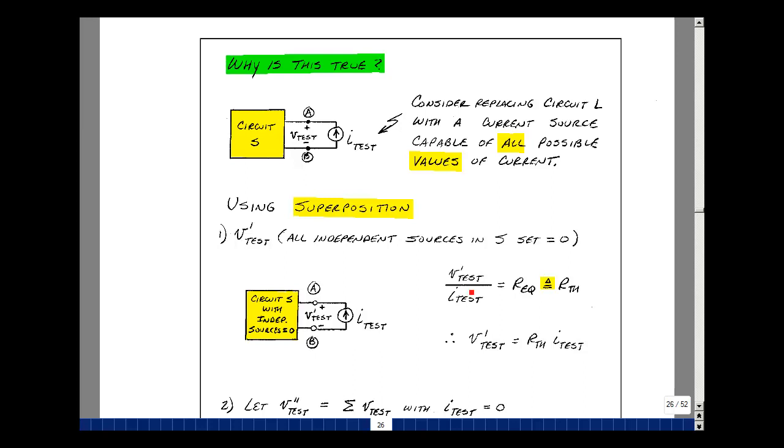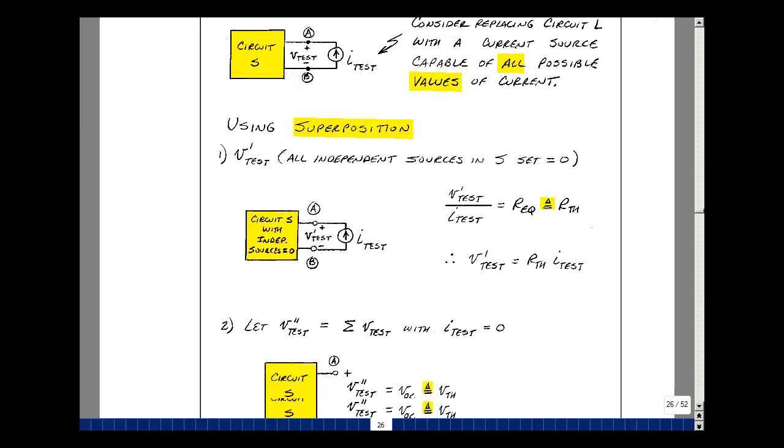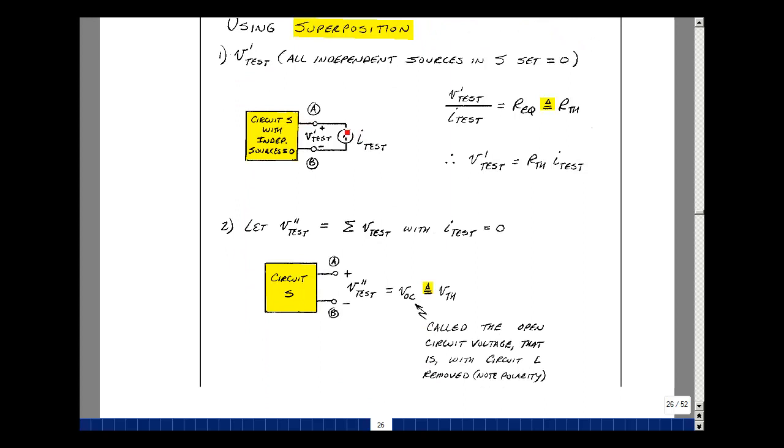I'll just cross multiply. V_TEST prime is R Thevenin times I_TEST. And I'm going to find V_TEST double prime due to all the other sources. You set this current source equal to zero, that's an open circuit, and find the voltage across here due to the remaining sources. Now again, you can take them one at a time, or just take the collective total, and there'll be a voltage here, I'll call that V_TEST double prime.